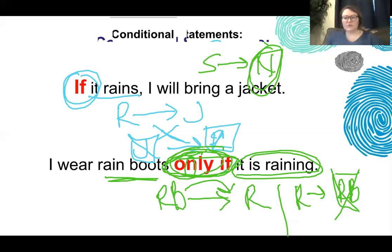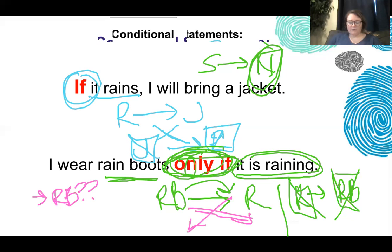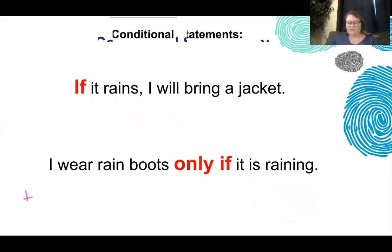The tricky part: does that mean when it's raining, I will for sure wear rain boots? No, because you always have to flip and reverse. Being raining is not enough to guarantee I'm wearing rain boots — that would be a false contrapositive. So 'only if' introduces the necessary condition; 'if' introduces the sufficient.